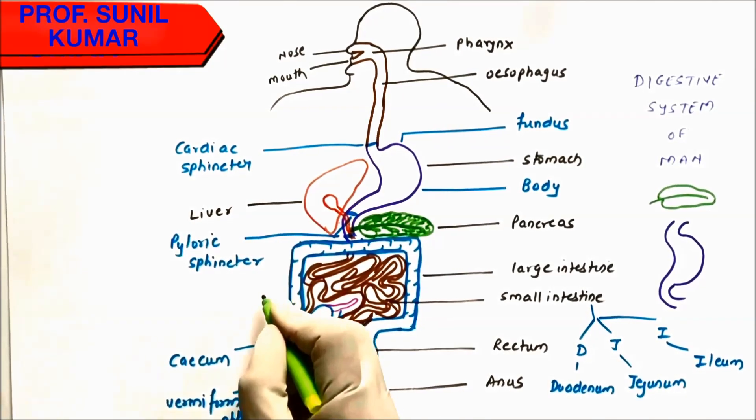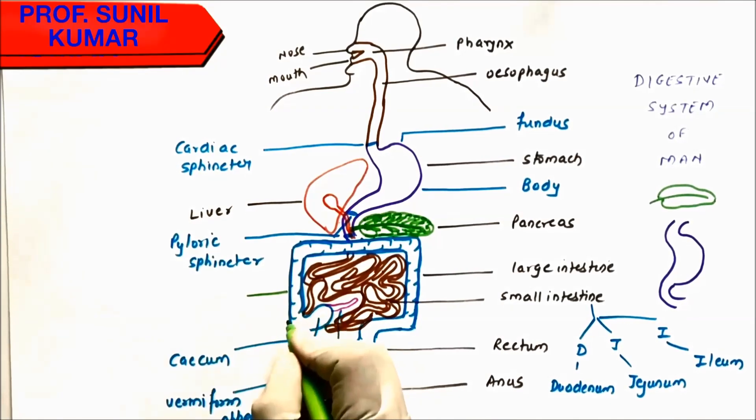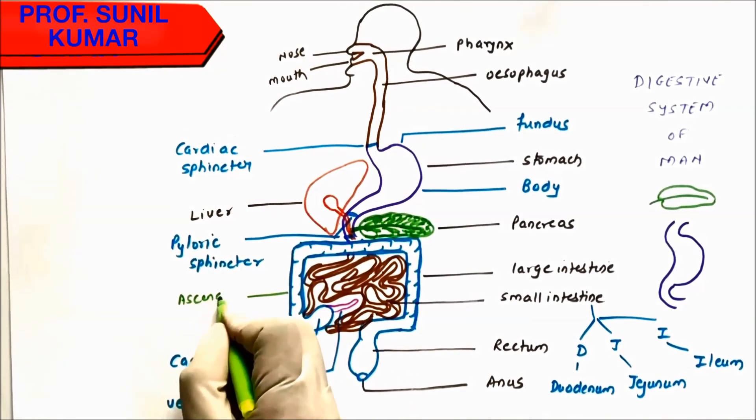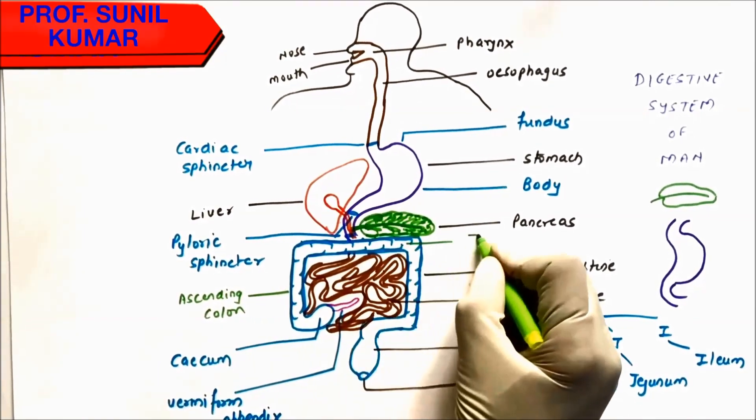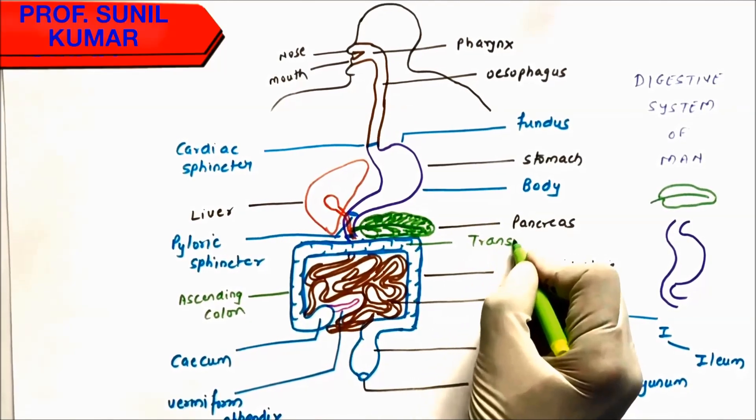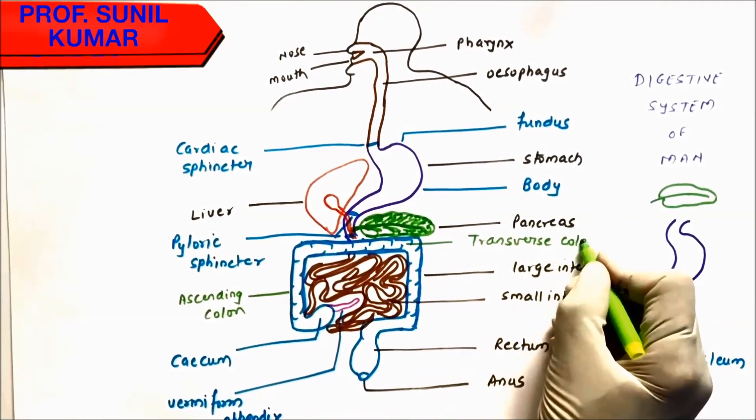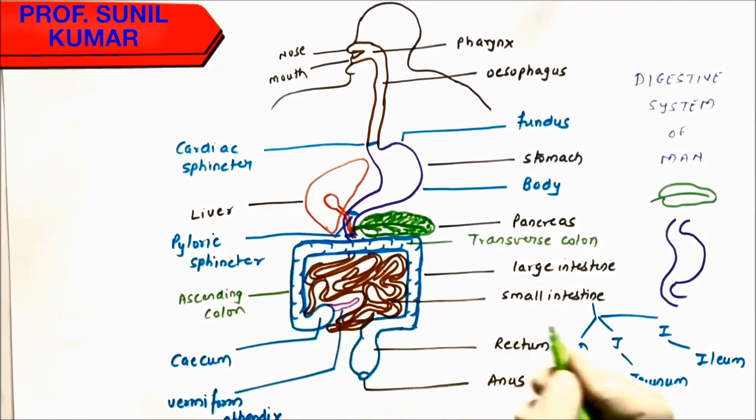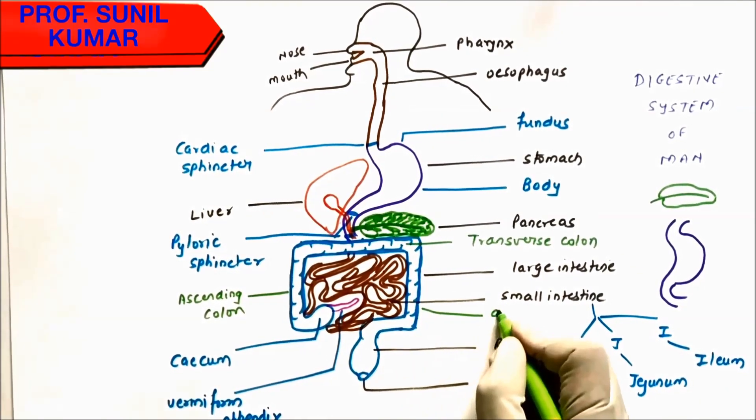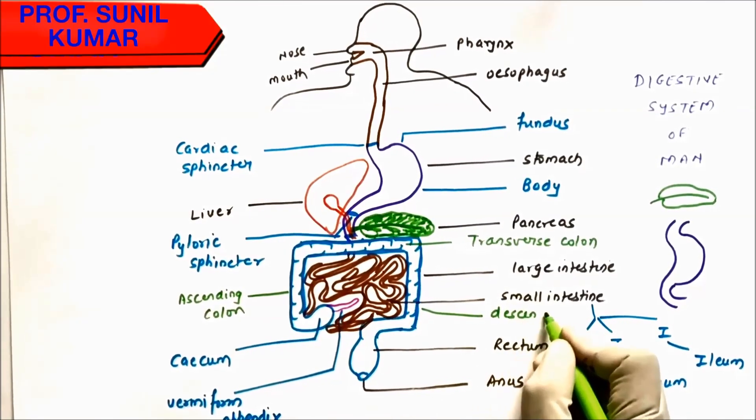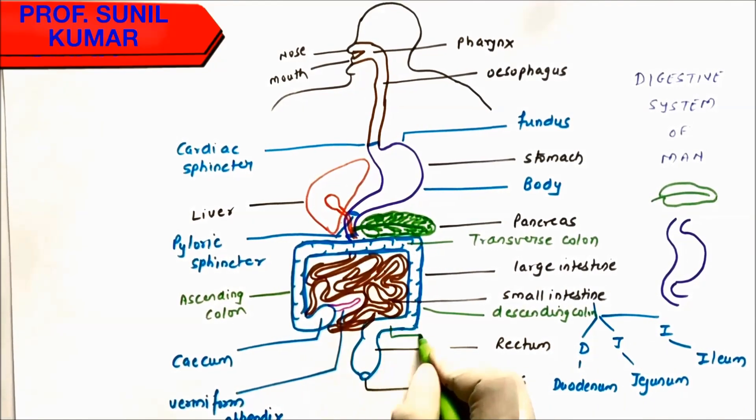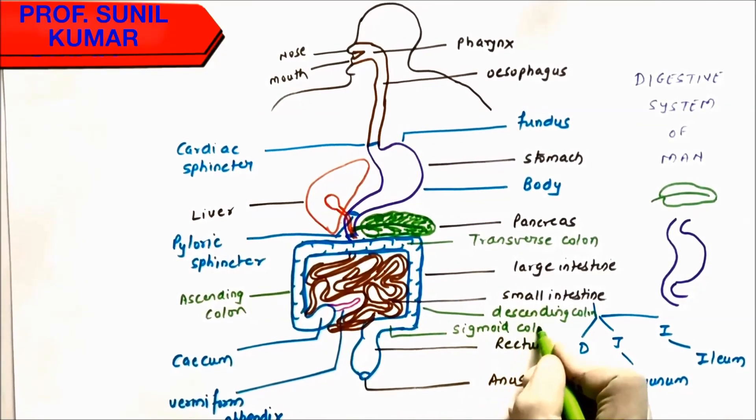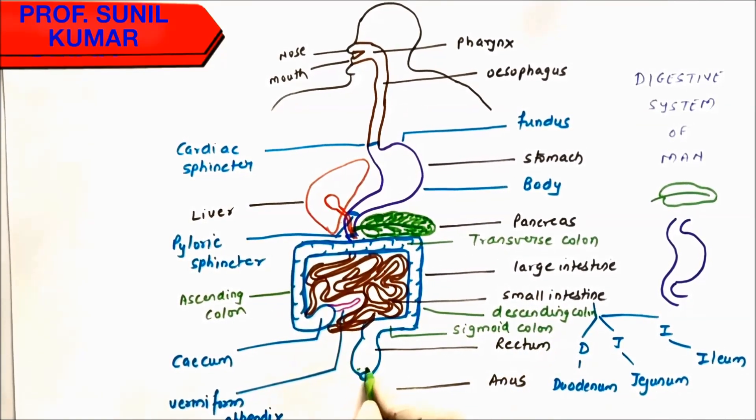The large intestine is also called the colon. So we have different colons—the ascending colon, which is meant for absorbing the water and minerals, then we have the transverse colon. The large intestine which runs downward is called the descending colon. We have an S-shaped curve colon that is called the sigmoidal colon. There is one more sphincter present near the anus which is called the anal sphincter.